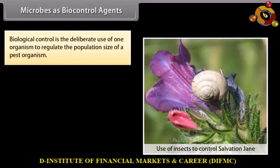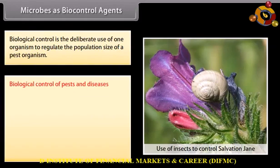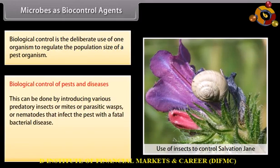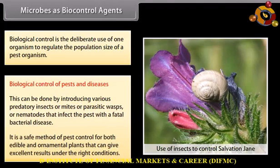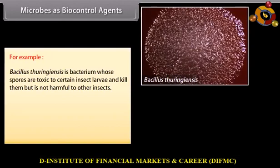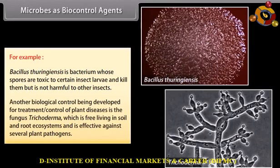Microbes as biocontrol agents. Biological control is the deliberate use of one organism to regulate the population size of a pest organism. This can be done by introducing various predatory insects, mites, parasitic wasps, or nematodes that infect the pest with a fatal bacterial disease. It is a safe method of pest control for both edible and ornamental plants. For example, Bacillus thuringiensis is a bacterium whose spores are toxic to certain insect larvae and kill them, but is not harmful to other insects. Another biological control being developed is the fungus Trichoderma, which is free-living in soil and root ecosystems and is effective against several plant pathogens.